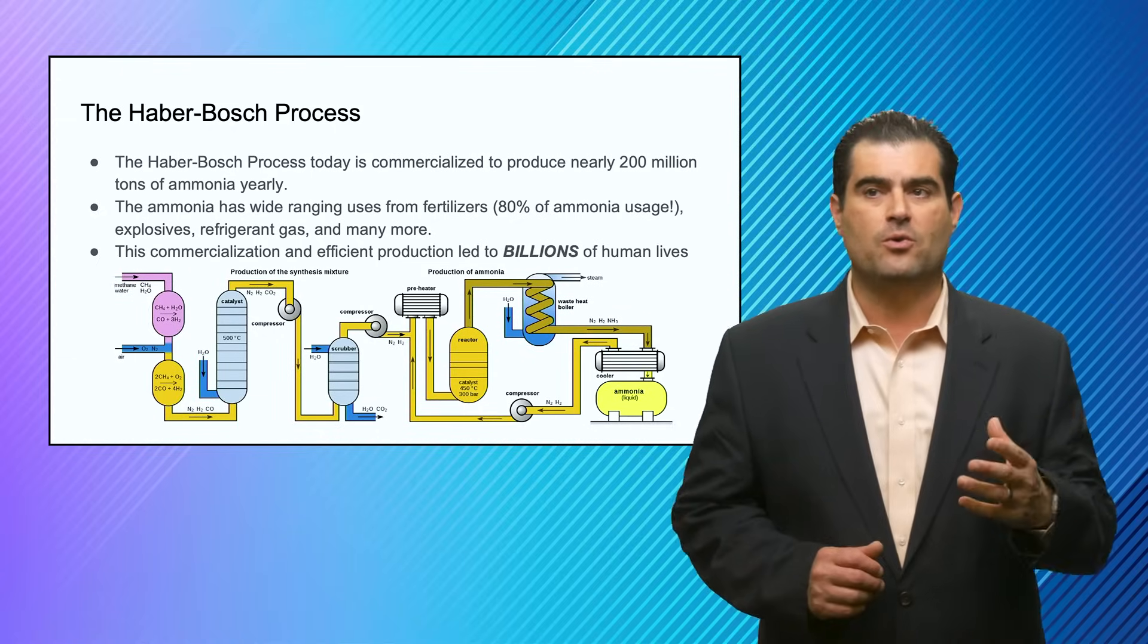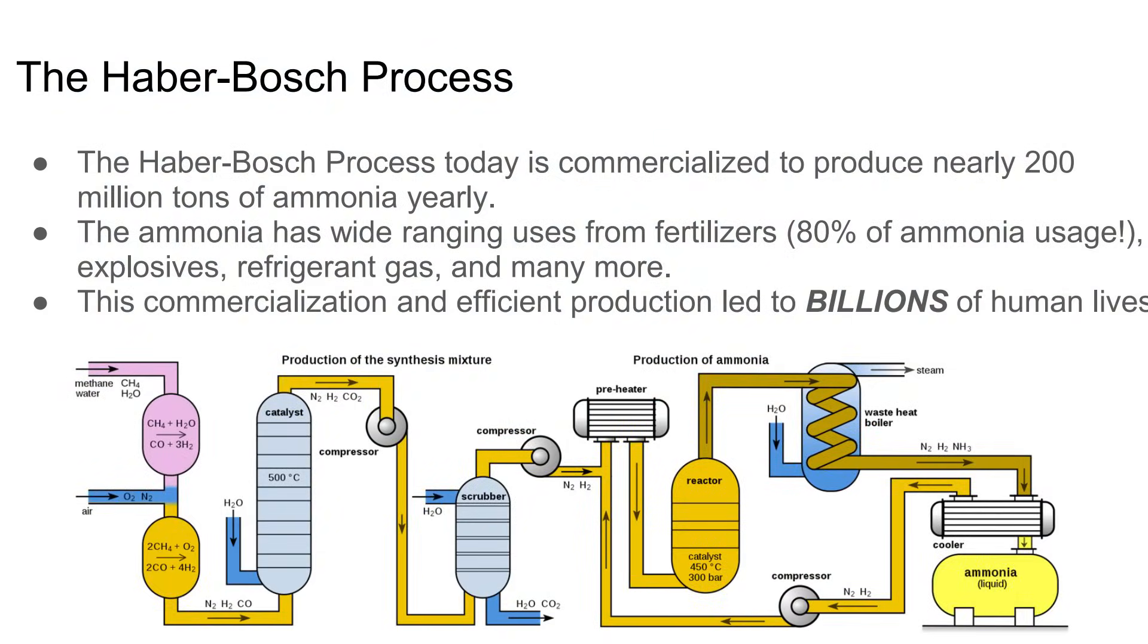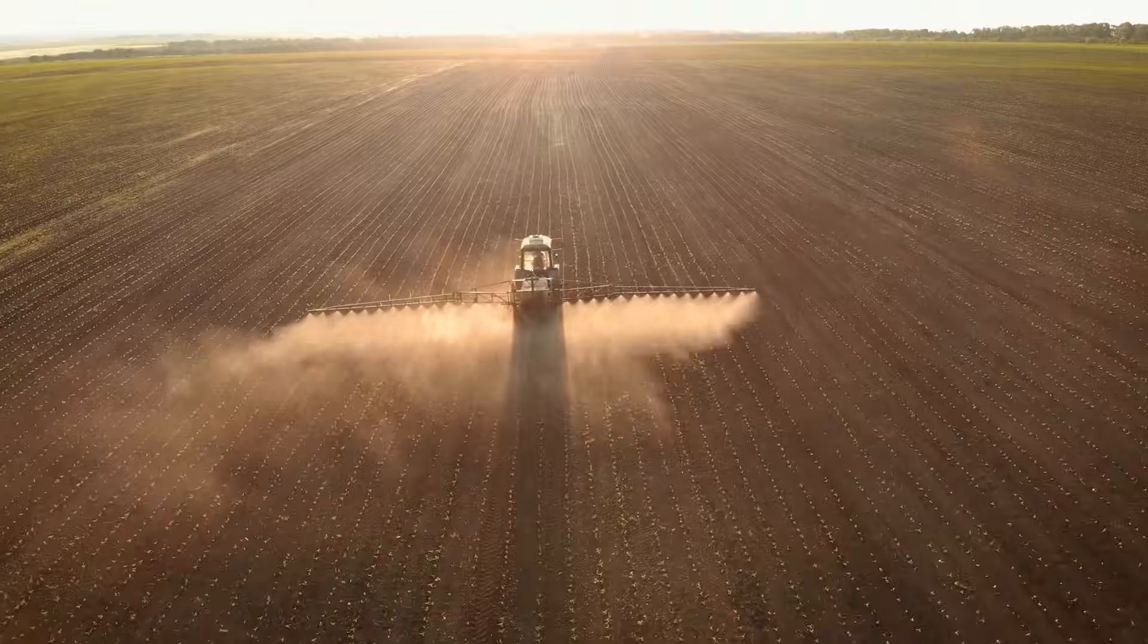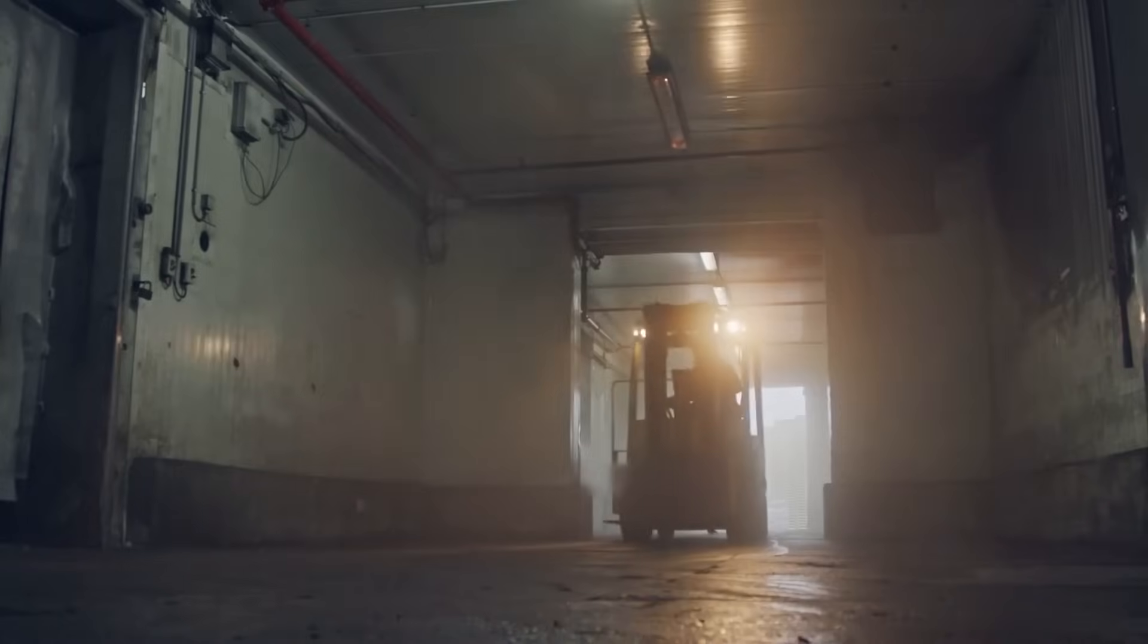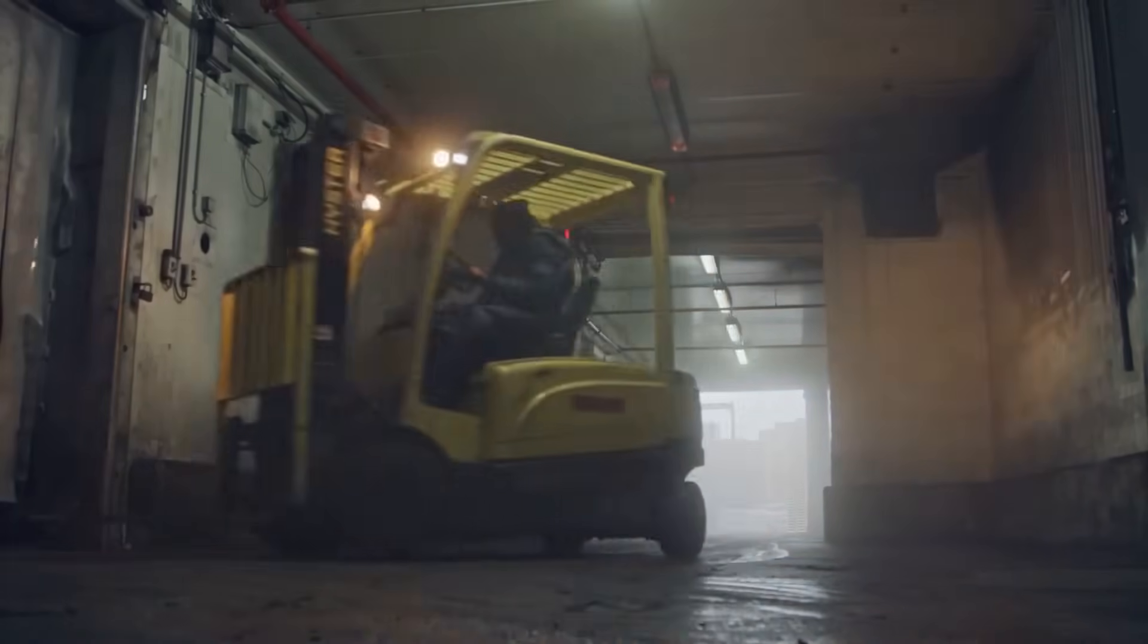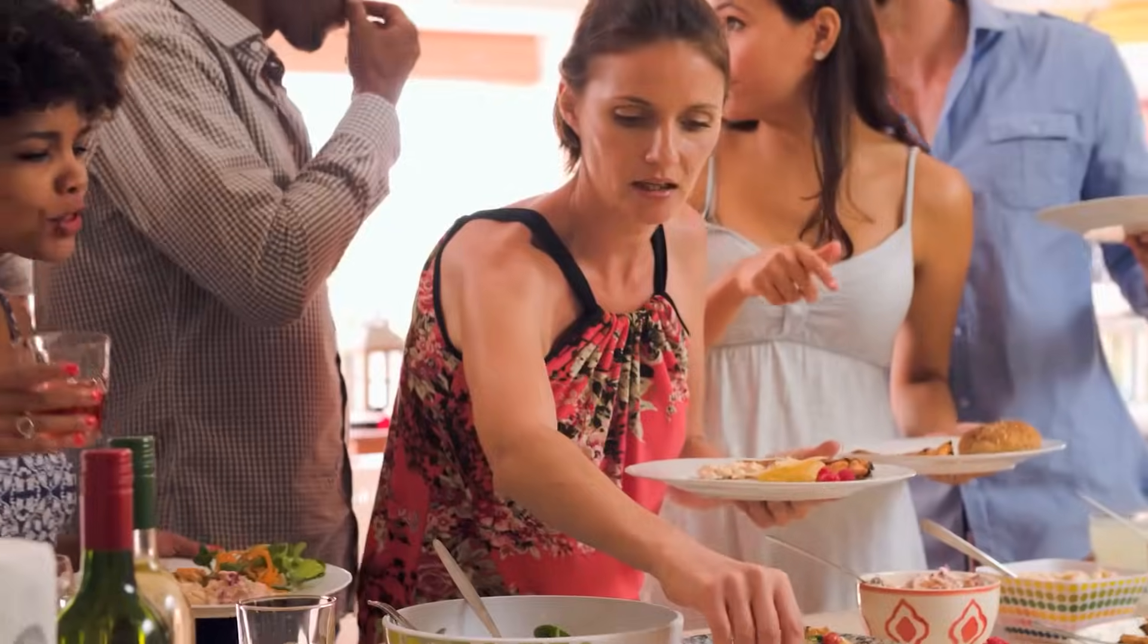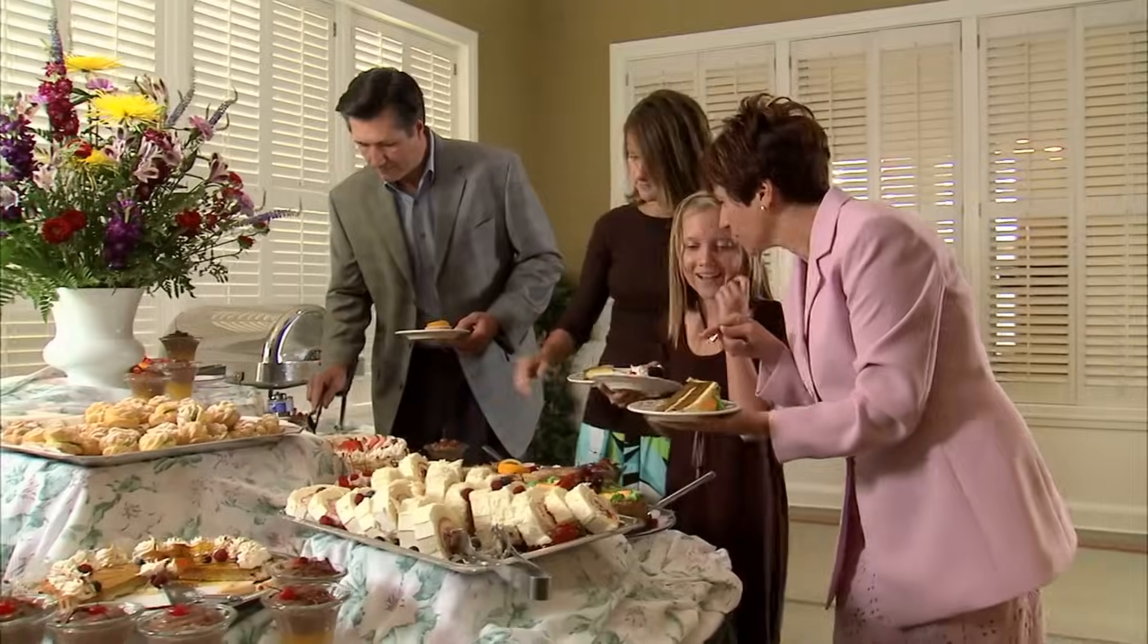The Haber-Bosch process, shown here, is used to make literally 200 million tons of ammonia every single year. Ammonia has wide-ranging uses, from fertilizers, where it uses mostly 80% of the ammonia, to explosives, to refrigerant gases, and many uses. The commercialization and efficient production has led to the feeding of billions of humans.